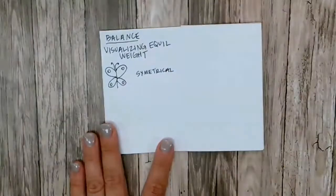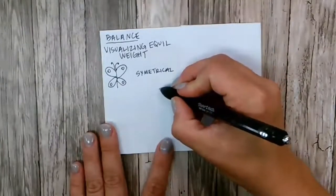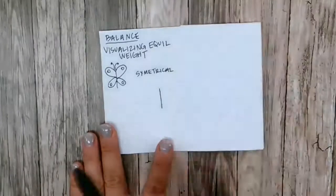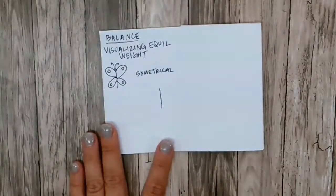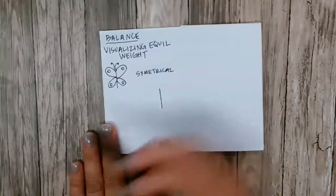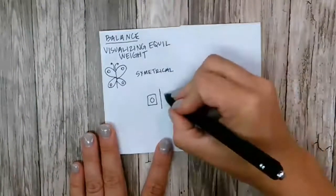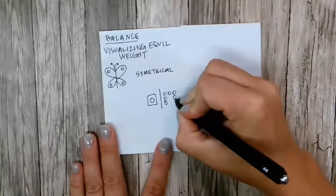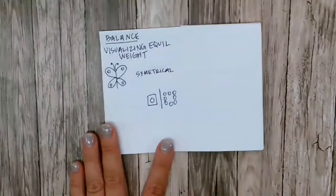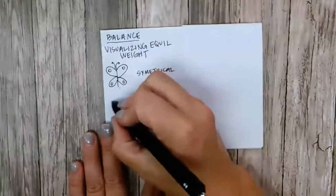There's also asymmetrical balance, which would be things on the left and on the right are not the same, but they still have equal visual weight. So maybe on this side, you have something like this, and on this side, something like that. Same equal visual weight, that is asymmetrical balance.